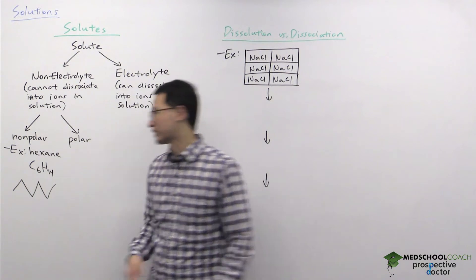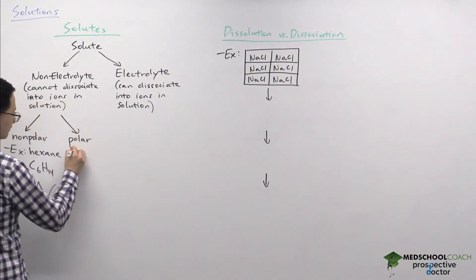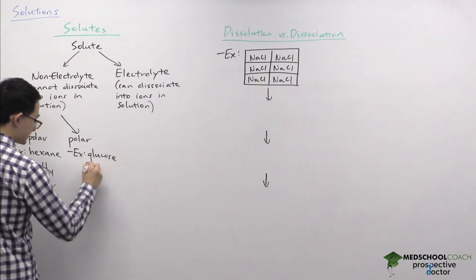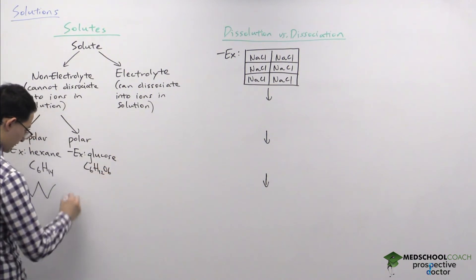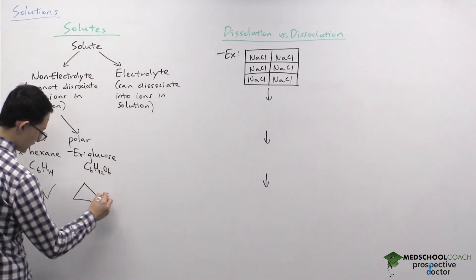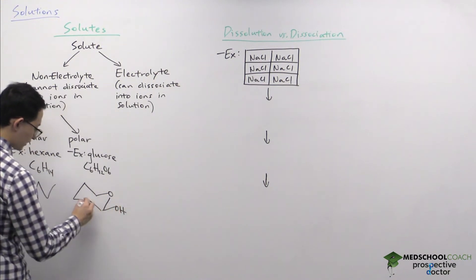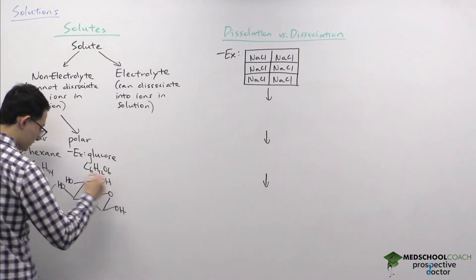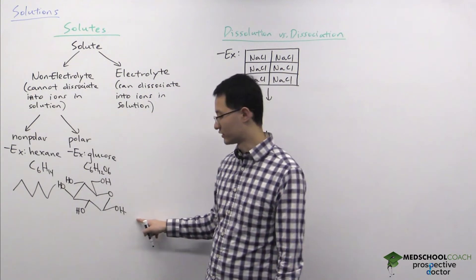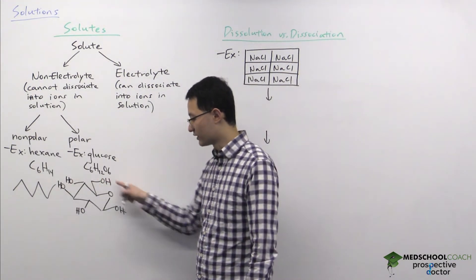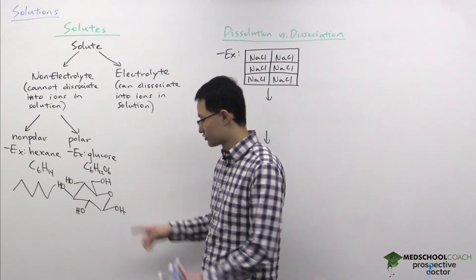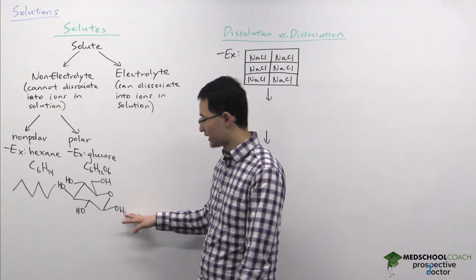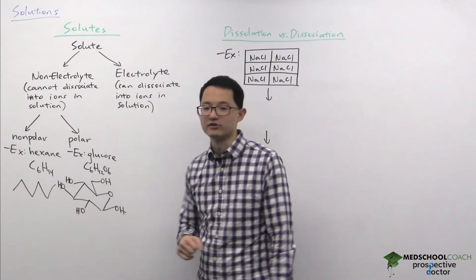Polar non-electrolytes — a good example is glucose, with chemical formula C6H12O6. When we look at the chemical structure of glucose, it helps explain why polar non-electrolytes can dissolve in water. Glucose is covered with hydroxyl functional groups, which are capable of forming favorable interactions with water — hydrogen bonds. This is what allows polar non-electrolytes like glucose to dissolve in water.